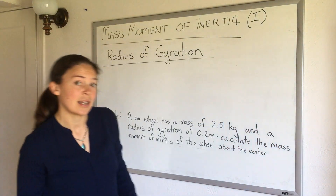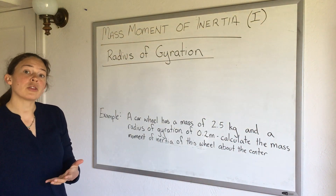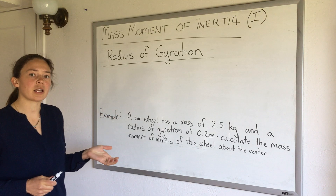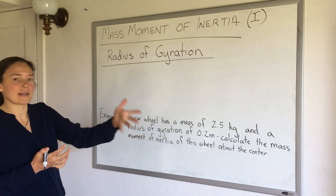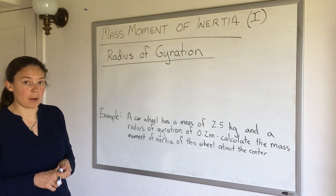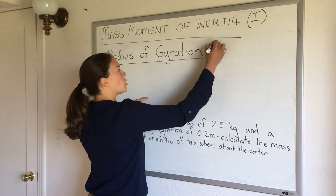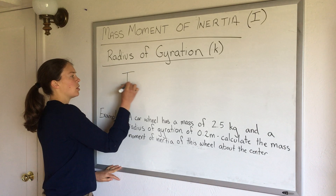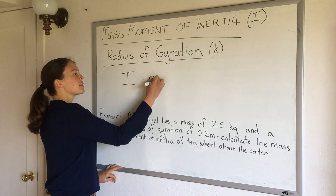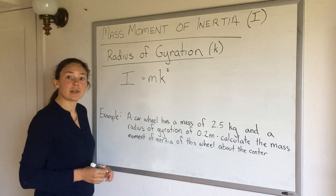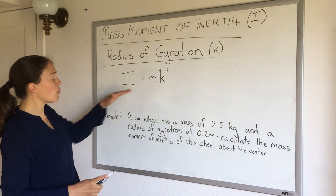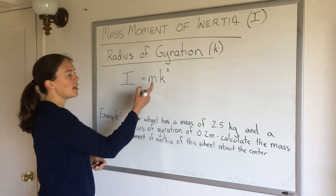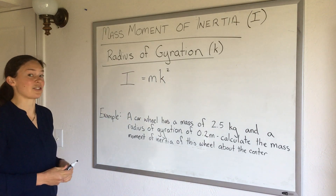Sometimes people do it for us, and instead of just reporting the mass moment of inertia, they'll often report a radius of gyration. So what is a radius of gyration? One way to think about it is the average distance that the mass is from the center, in terms of mass moment of inertia. We can use the radius of gyration — usually given as the letter k — to calculate a mass moment of inertia with a very simple equation: the mass moment of inertia equals the total mass times the radius of gyration squared. It's a way to compare things that are rotationally similar but have different mass distributions.